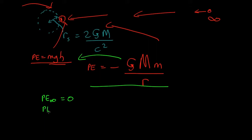Potential energy at the Schwarzschild radius, the event horizon, equals minus GM black hole, m of whatever you're dropping in, over the Schwarzschild radius r_s, which is 2GM of the black hole over c squared.